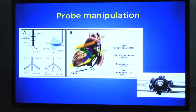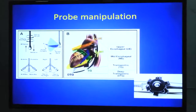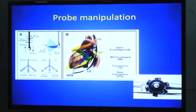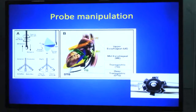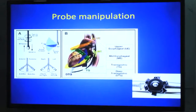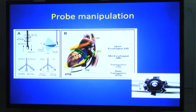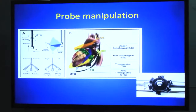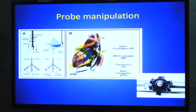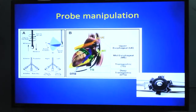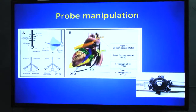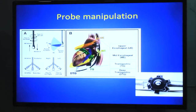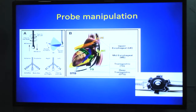The first manipulation is advancing and withdrawing. Then, turning the probe mechanically towards the right side — clockwise rotation — is used to visualize the rightward cardiac structures. Counter-clockwise rotation is used to visualize the left-side cardiac structures.